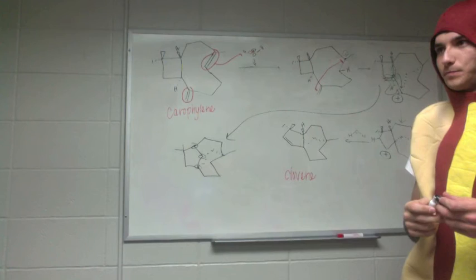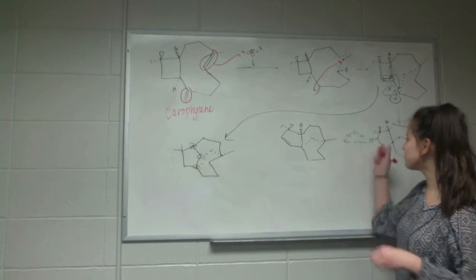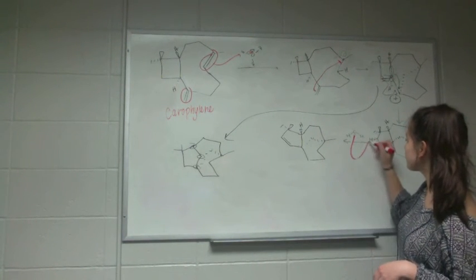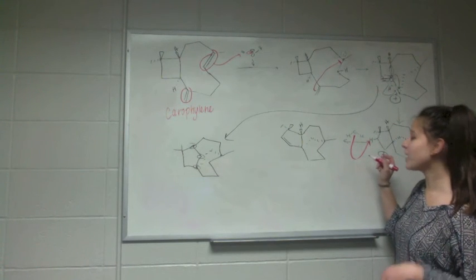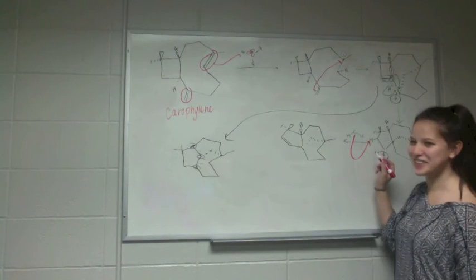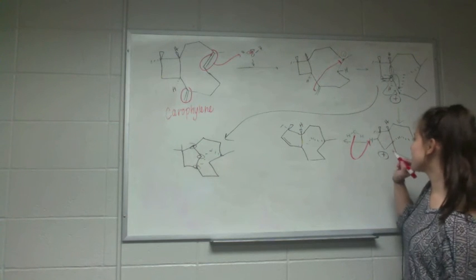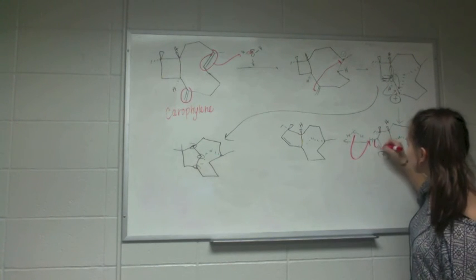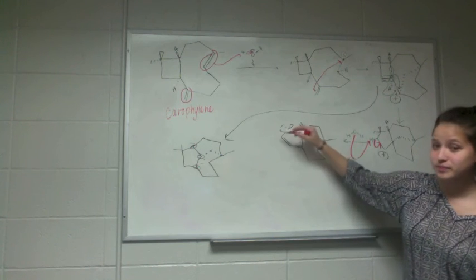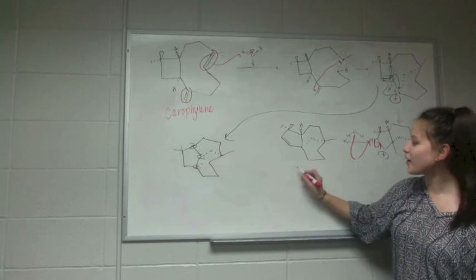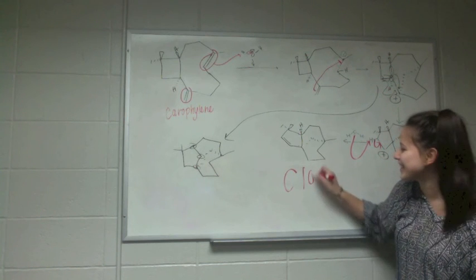In the last step, by elimination, the water is going to take off the hydrogen, allowing the electrons to move and form an alkene. That produces our second product, clovine.